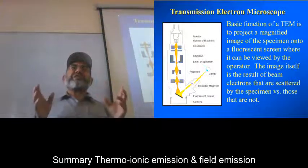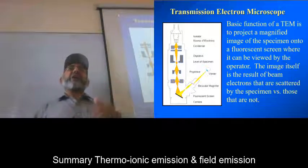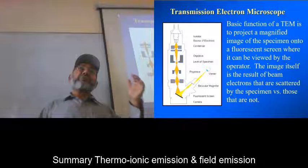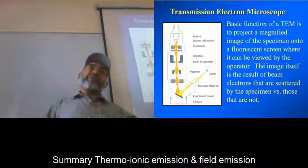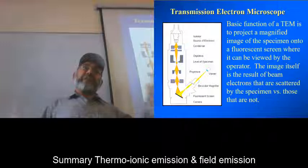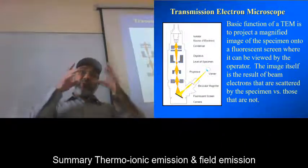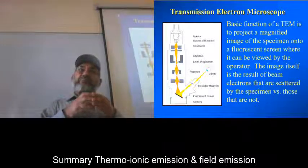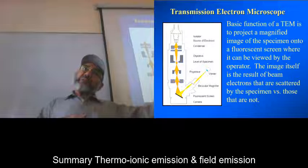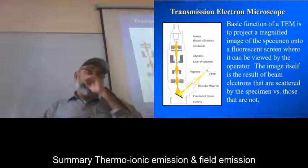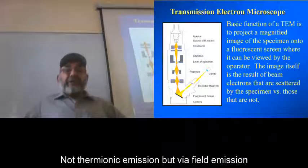But the most sophisticated machines are using field emission guns. Because field emission guns give you edge over the thermo-ionic emission in the form of the resolving power of the microscope, in the form of the very high magnification images. Because the more organized the beam is, the easier it will be to interpret the images, to make the images, to get the diffraction patterns and things like that, than with the thermo-ionic emission.